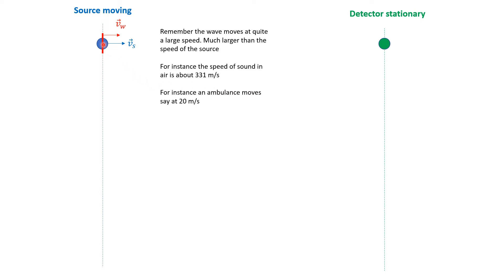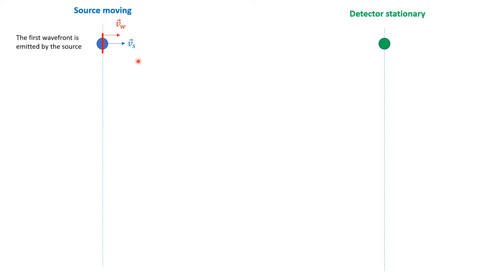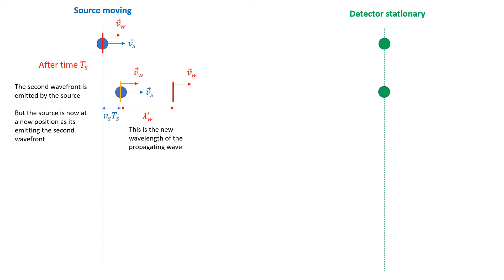The source is moving with a speed v_source and the wave is moving with a speed v_wave. At time zero, the first wavefront is emitted by the source, indicated by this bar. After a time T_s, which is the period of the source, that's the time at which the second wavefront has to be emitted. But because the source is moving, when it emits the second wavefront it has moved a certain distance.